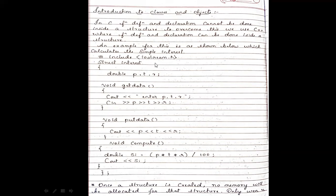First, the header file — you need to write 'iostream.h' for cin and cout to work, which stands for input-output stream. Next, to define the structure, use the keyword 'struct' followed by the structure name 'interest'. Inside the structure, we declare three variables: principal, time, and rate — all of double data type.